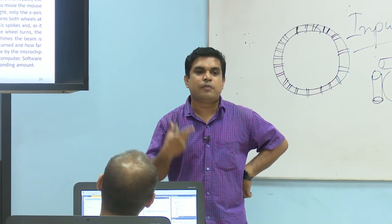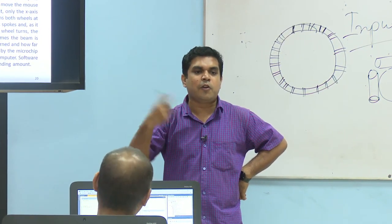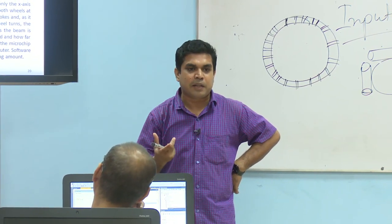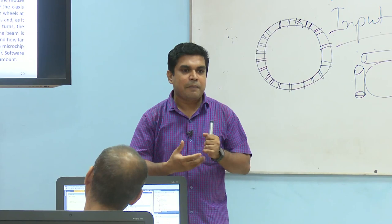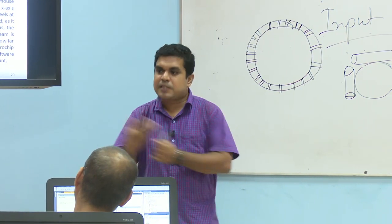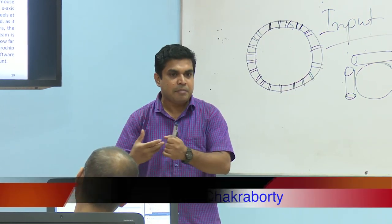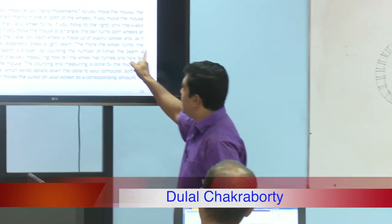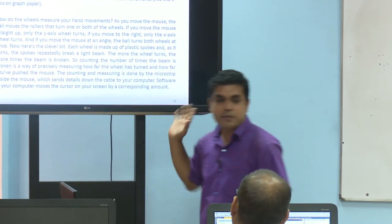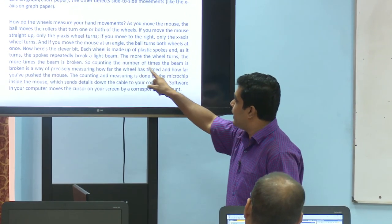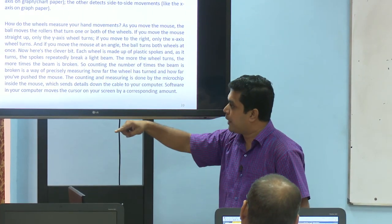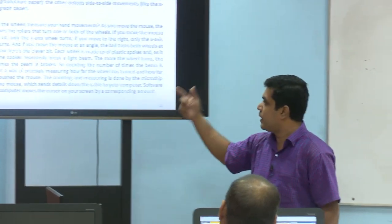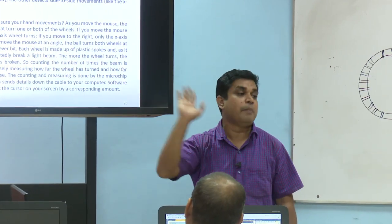In digital terms, on and off means pulses — zeros and ones. This is an electric pulse. The more the wheel turns, the more times the beam is broken. Counting the number of times the beam is broken is a way of precisely measuring how far the wheel has turned and how far you have pushed the mouse.